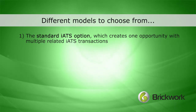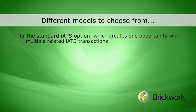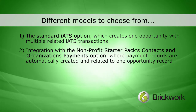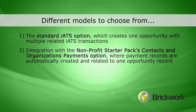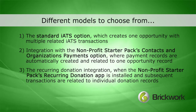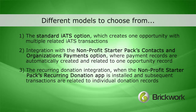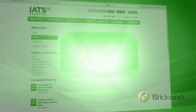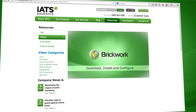One: the standard iATS option, which creates one opportunity with multiple related iATS transactions. Two: integration with the non-profit starter pack's contacts and organization's payments option, where payment records are automatically created and related to one opportunity record. Or three: the recurring donation integration, when the non-profit starter pack's recurring donation app is installed and subsequent transactions are related to individual donation records. More details on all of these models can be found in the Brickwork installation and configuration guide.